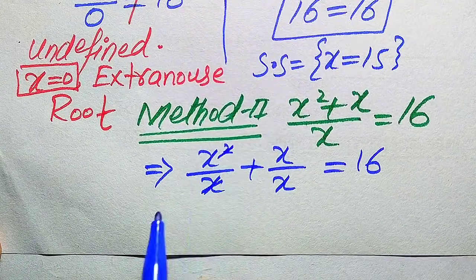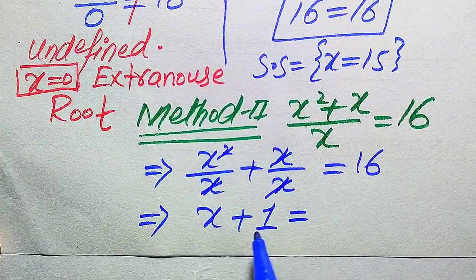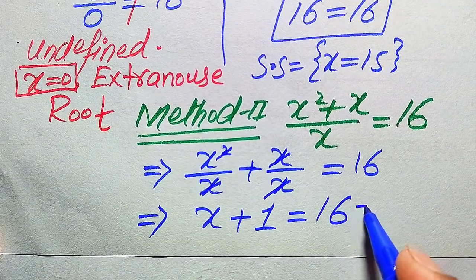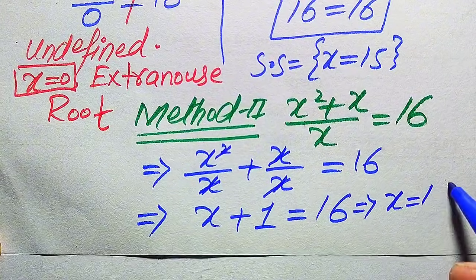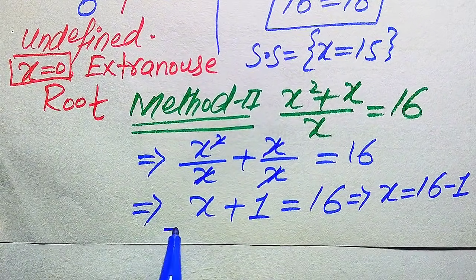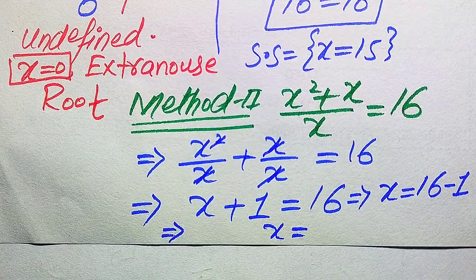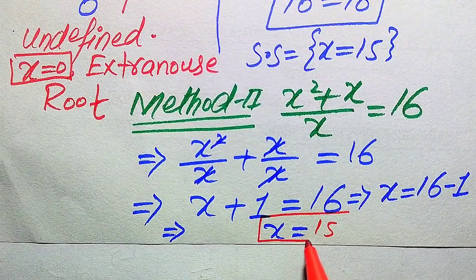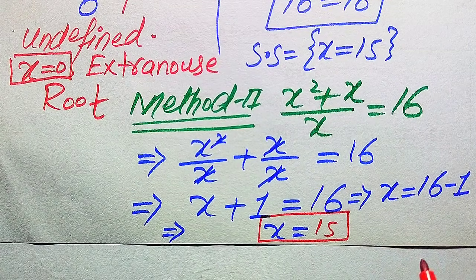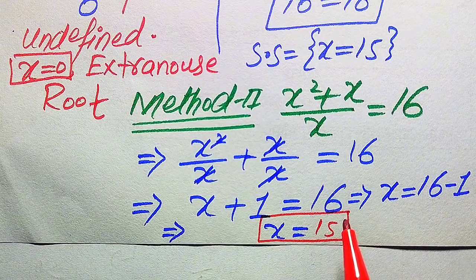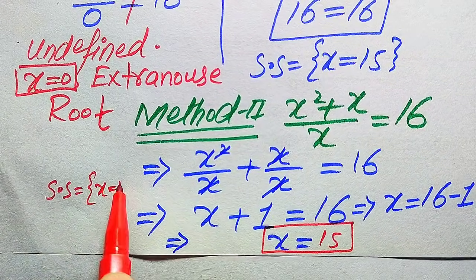Breaking the fraction gives x squared over x plus x over x equals 16. The first term simplifies to x, and the second term simplifies to 1, giving x plus 1 equals 16. Moving 1 to the right hand side gives x equals 16 minus 1, so x equals 15. In the second method we get only one root directly, and since x equals 15 is already verified, the solution set is x equals 15.